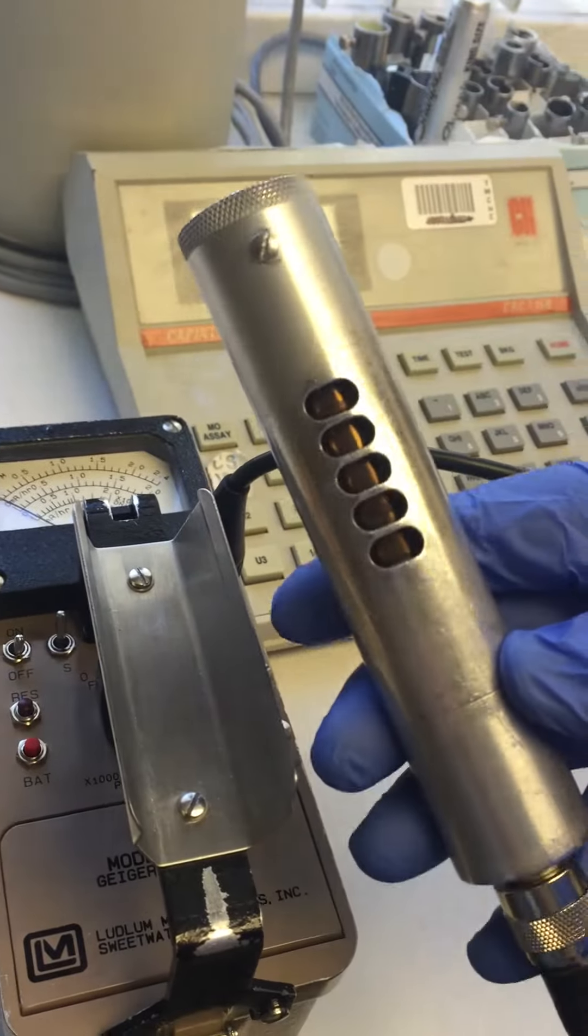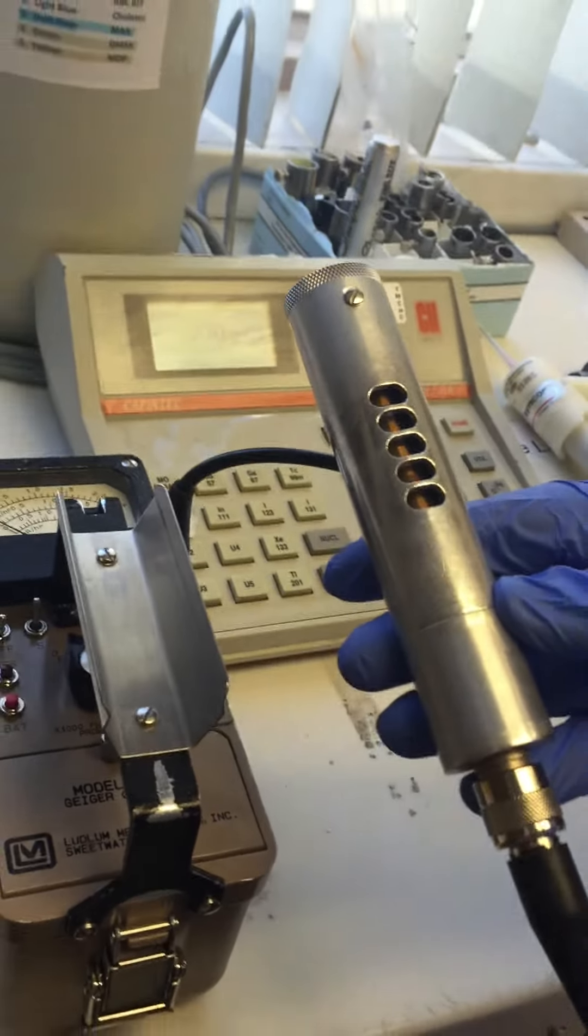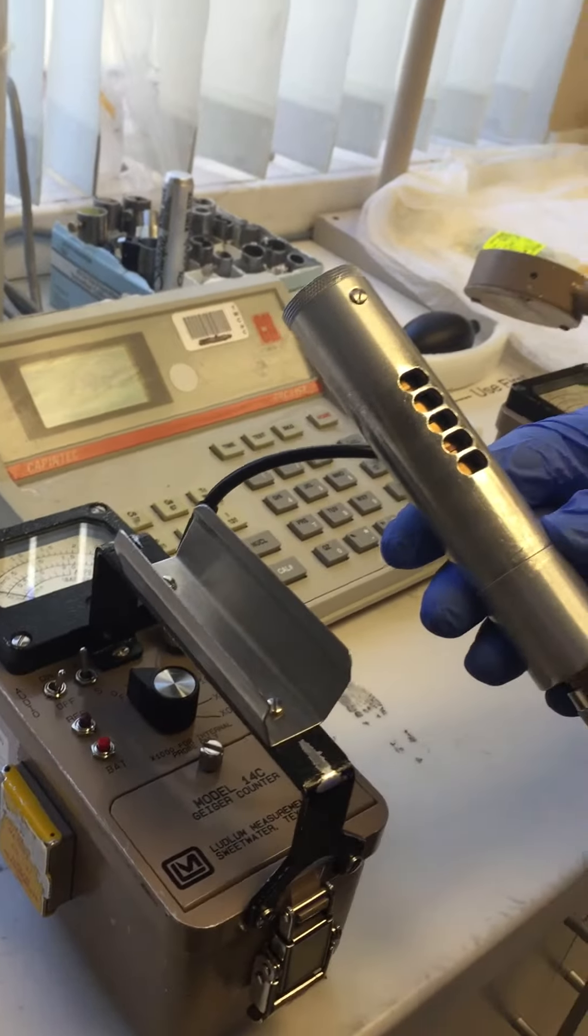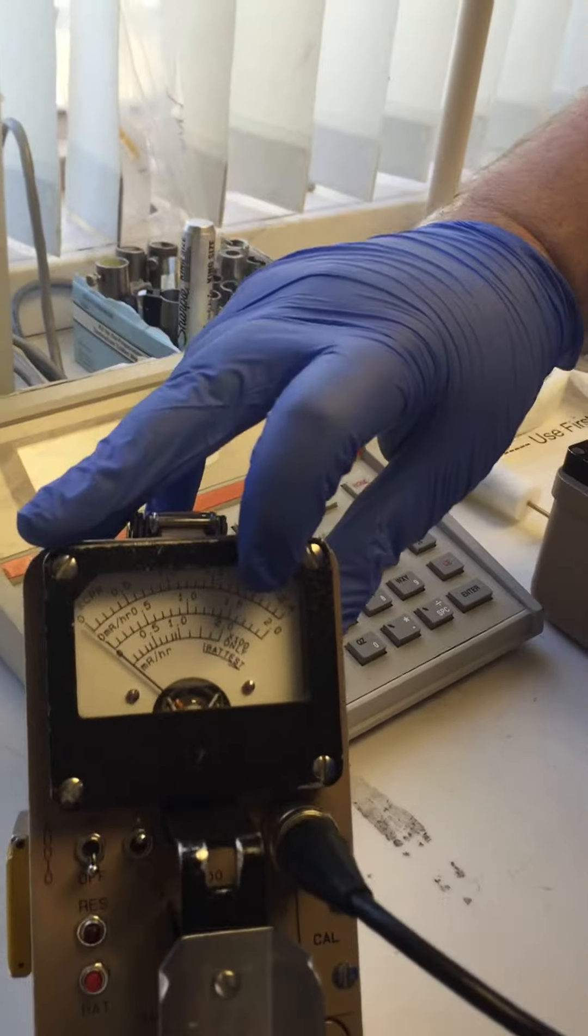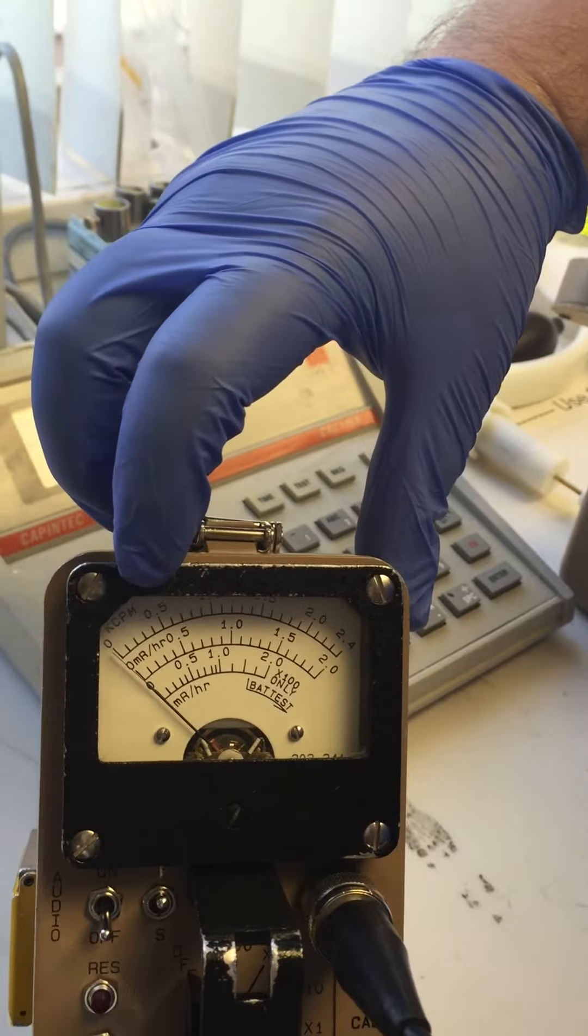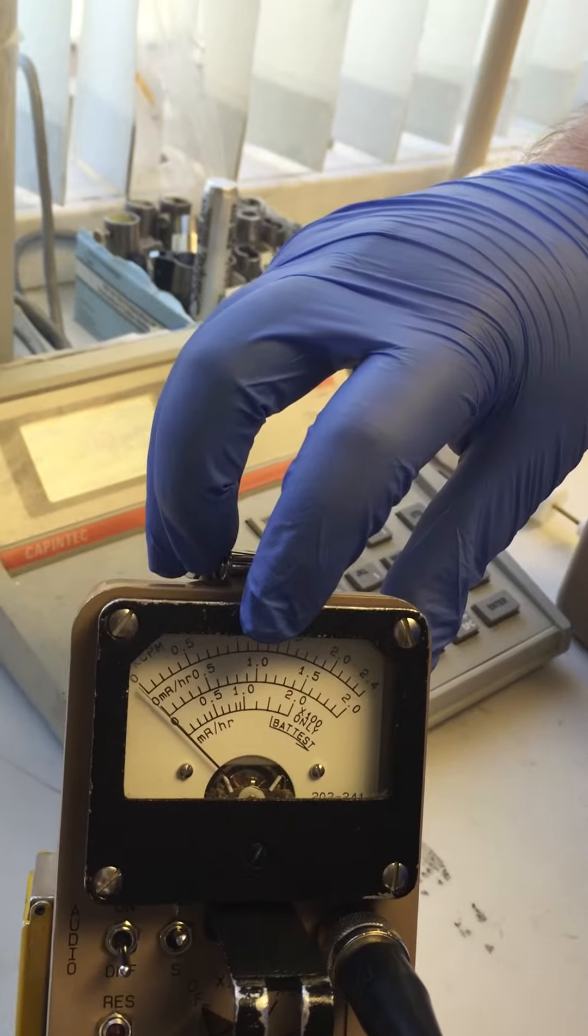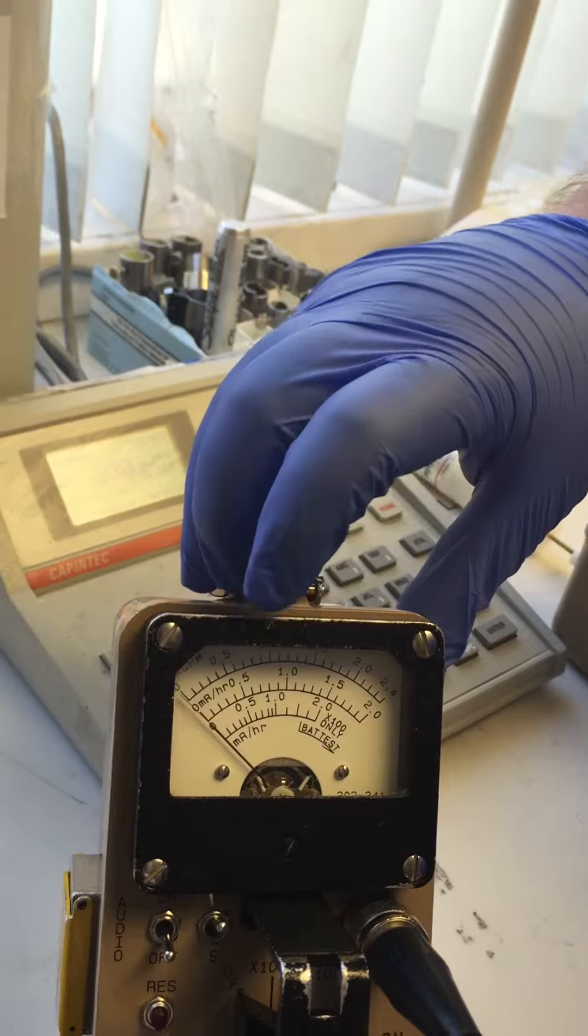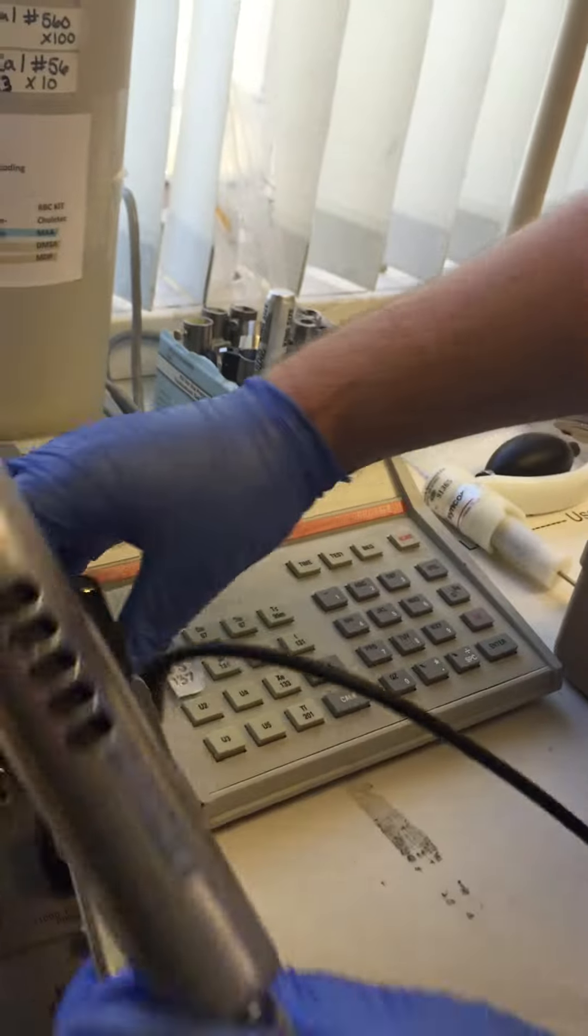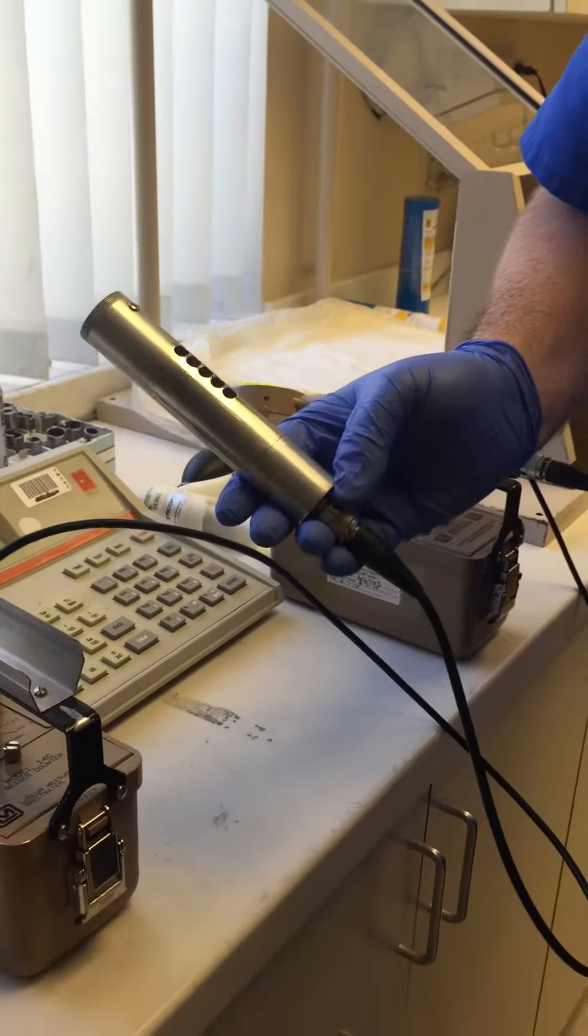This right here is a side window probe. It has this window on the side here, and we use this one for detecting exposure. If you look on here, the needle, you can see at the top it says KCPM and at the bottom it says mR per hour. So when we're looking for exposure, we're actually going to be looking at the mR per hour. We use this to check a package because we know there's activity there, we're just trying to see how much it is.